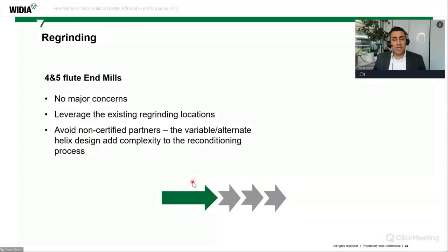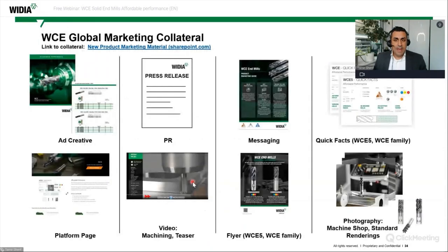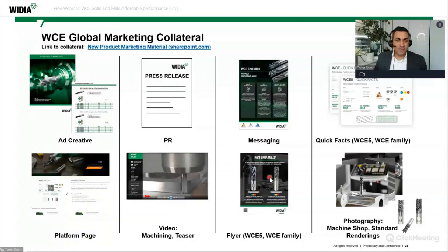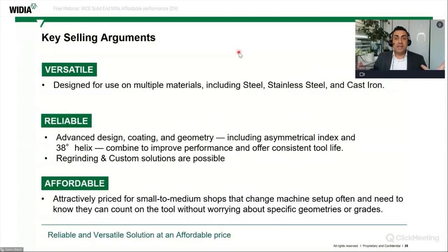Regrinding: the four and five flute end mills can be reground — no major concerns. There are many regrinding centers globally; ask your sales contacts, partners, or distributors. For marketing collateral, a full range of materials has been created: brochures in English and multiple languages for metric and inch, a webpage, quick facts, pictures, videos, messaging documents, flyers, one- and two-pager flyers, press releases, and social media content — all available for download.